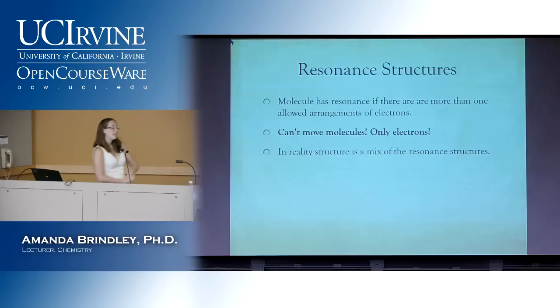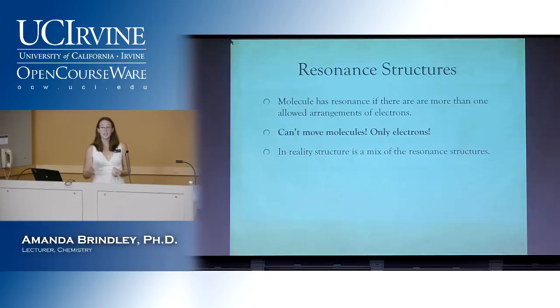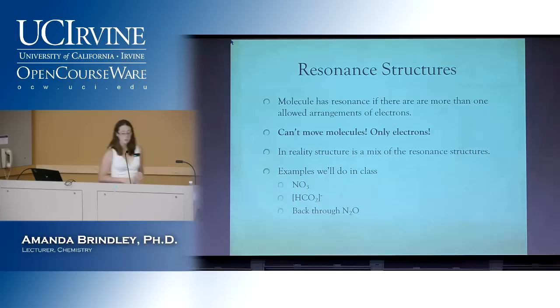In reality, we might draw three different resonance structures to make up a Lewis structure, and technically you have to have all three for it to be correct. If I tell you to draw the Lewis structure for NO3 and you only draw me one structure, technically you're wrong, unless I specifically ask you to just draw one. The reason is that just one isn't a real accurate representation of what's happening — in reality it's a mixture of all of them.